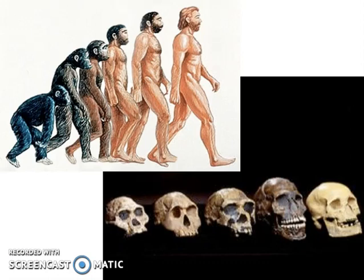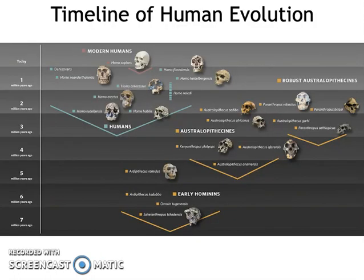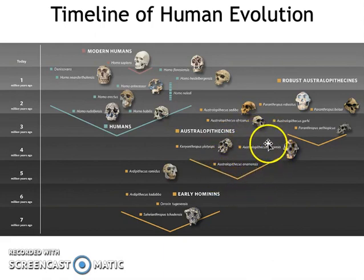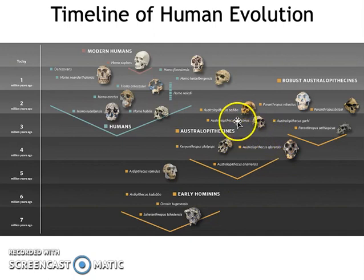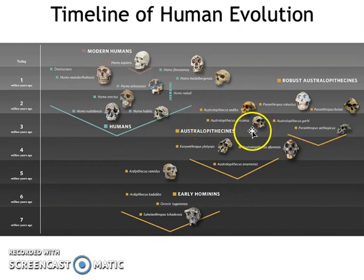The species was called Australopithecus because 'australo' means south, and 'africanus,' of course, for Africa — this fossil was discovered in South Africa. Australopithecus was a very early hominid. As we can see from this chart, Australopithecus existed roughly 5 to 4 million years ago, and Australopithecus africanus specifically existed roughly 3 million years ago.